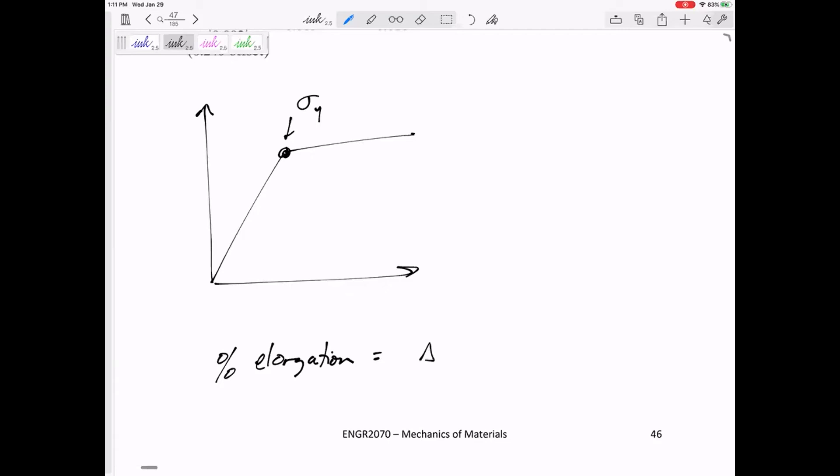I'm looking for the delta L over L, the strain, times 100. That percent sign really is like 100.